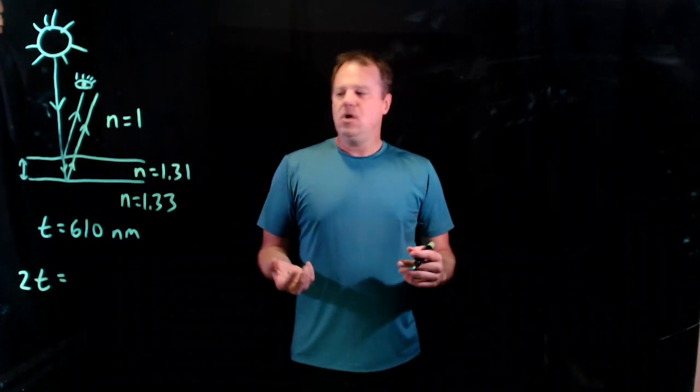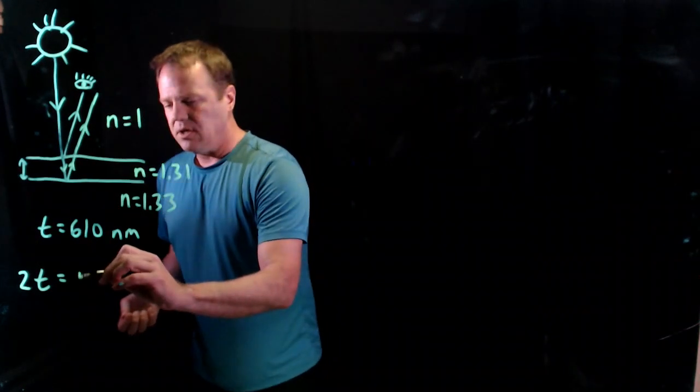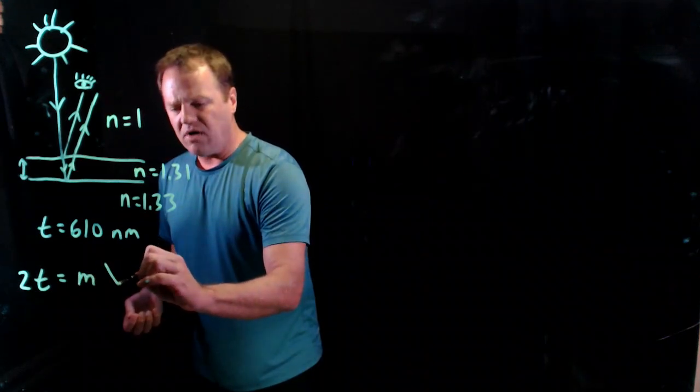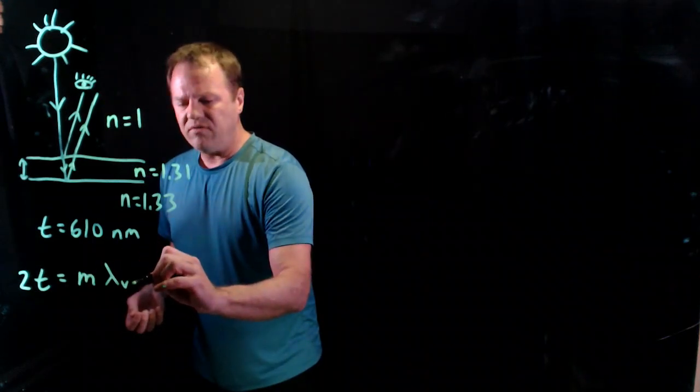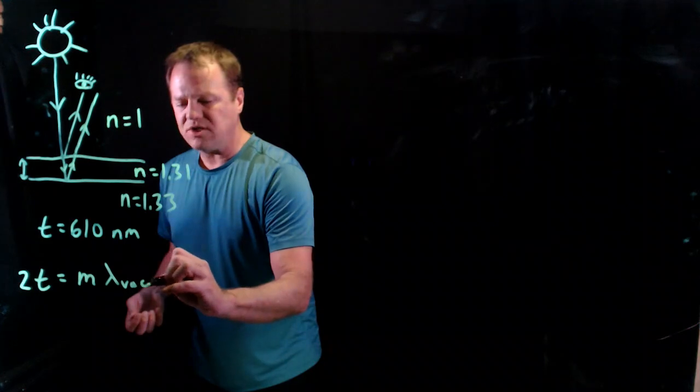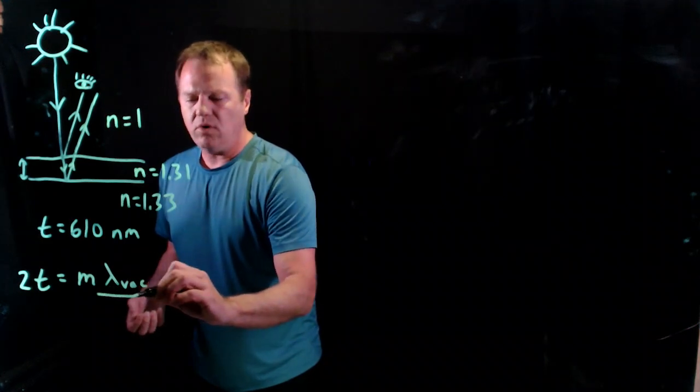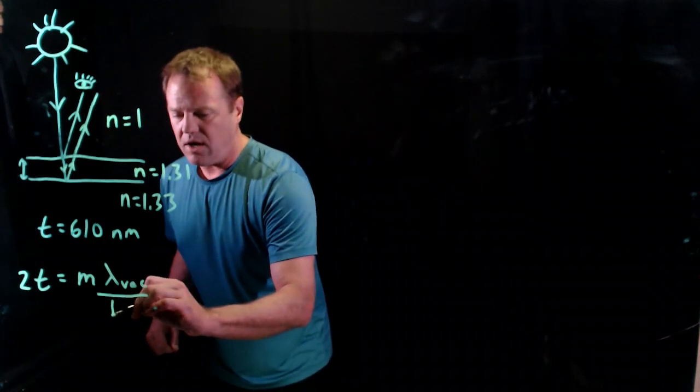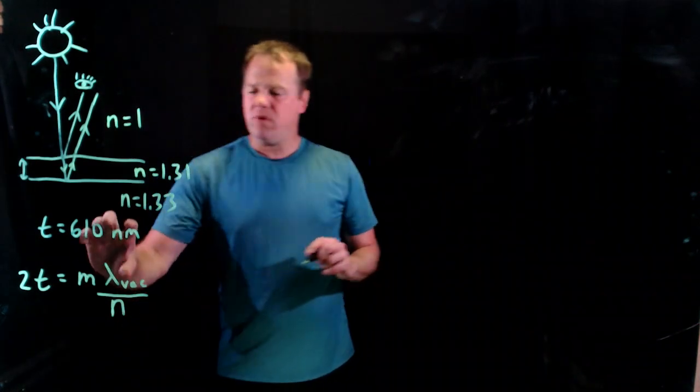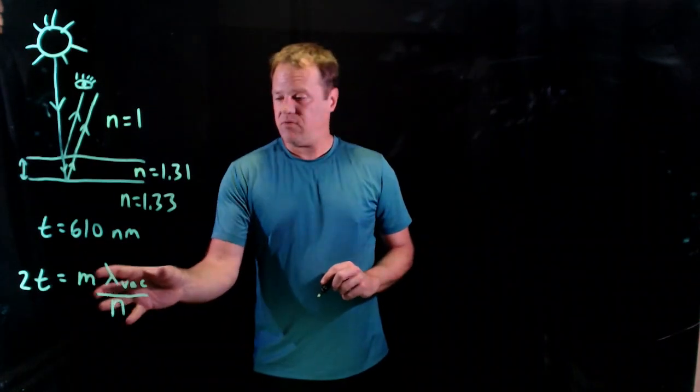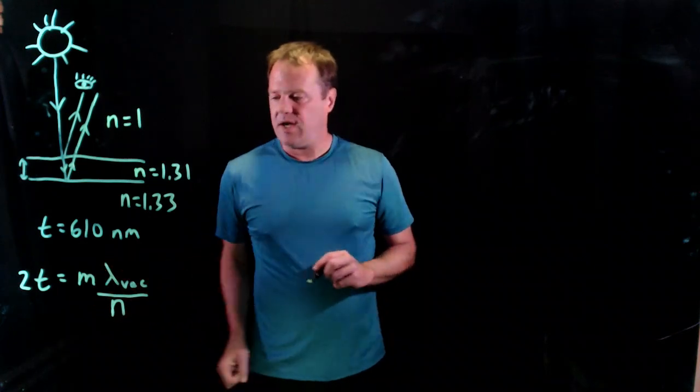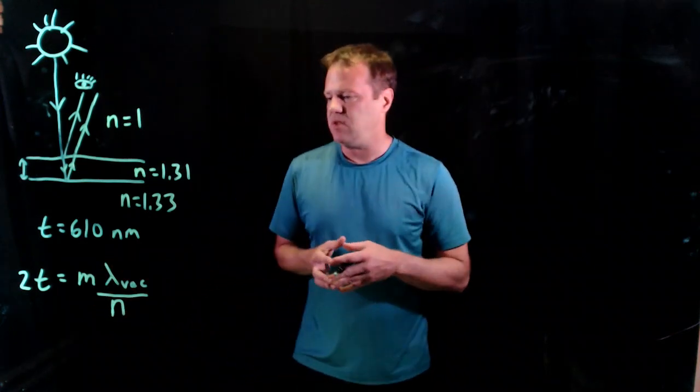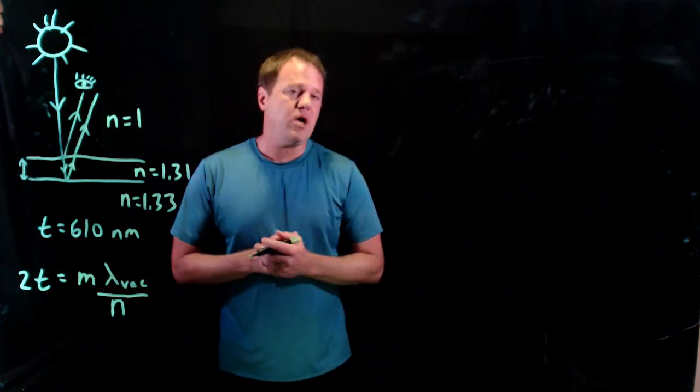And then we have m times lambda. But we want to be careful. We're looking for wavelength in the vacuum because that's what we know in order to compare it to human vision. So that's what we want to calculate. And so wavelength in the material will be wavelength in the vacuum divided by the index of refraction. That's the wavelength in the thin film. Okay, so this is the equation that we're going to use.